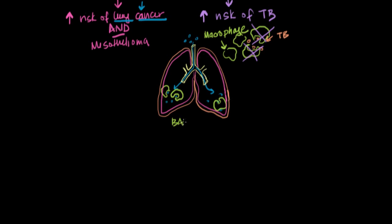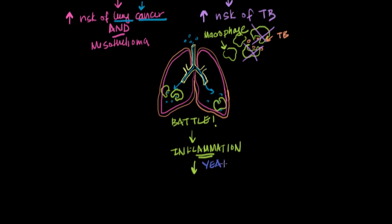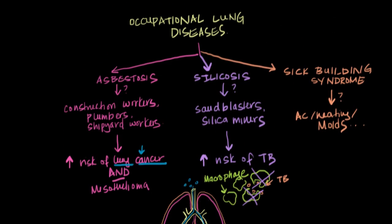Through the function of these macrophages or white blood cells engaging in battle in the lung, it creates an environment of inflammation. That inflammation, over the course of not days, weeks, or months, but several years, leads to the development of scarring and fibrosis. It is that fibrosis — through continual inhalation of these particles — that is responsible for the lung disease, causing difficulty breathing and other manifestations.